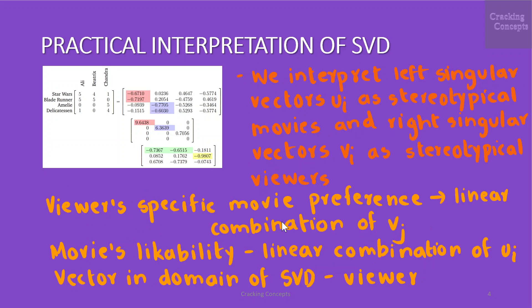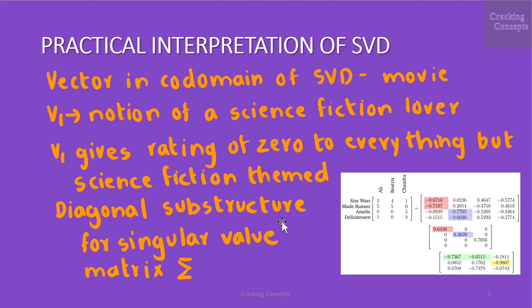And we interpret the left singular vectors U_i as stereotypical movies and the right singular vectors V_j as stereotypical viewers. We then make the assumption that any viewer's specific movie preferences can be expressed as a linear combination of V_j. Similarly, any movie's likability can be expressed as a linear combination of U_i. Therefore, a vector in the domain of SVD can be interpreted as a viewer in the space of stereotypical viewers and a vector in the co-domain of SVD correspondingly as a movie in the space of stereotypical movies.